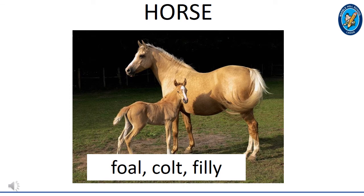This is a horse. The young one of a horse has three names. Just like the donkey, it's also called a foal. The male young one, like boys, is called a colt, and the female young one is called a filly. Just like how we have boys and girls, horses have colts and fillies. You can call them either one based on their sex, or you can just call them a foal, just like a donkey.